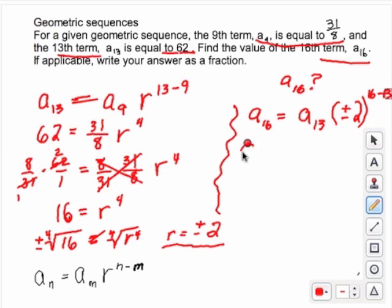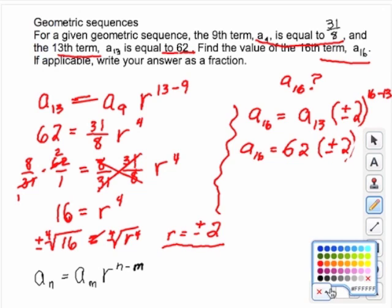So we'll get a sub 16, we'll replace a 13 with 62. Times plus or minus 2 to the, what's 16 minus 13? That is a 3.